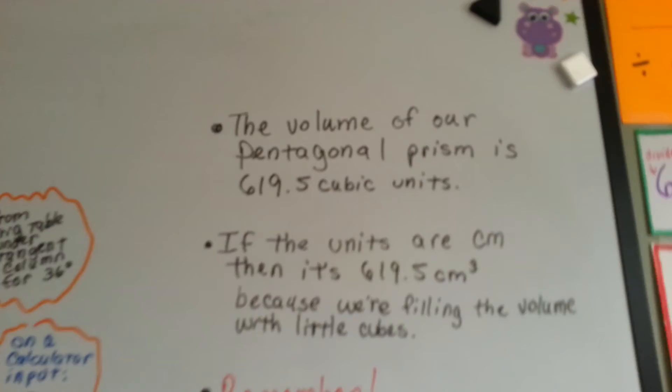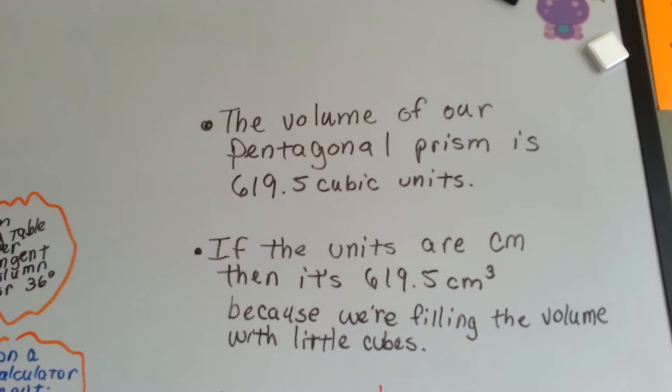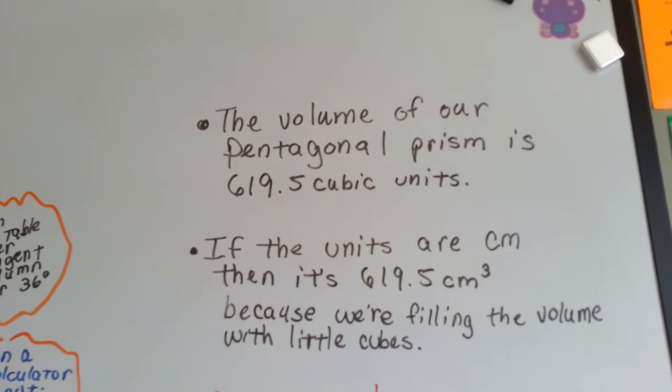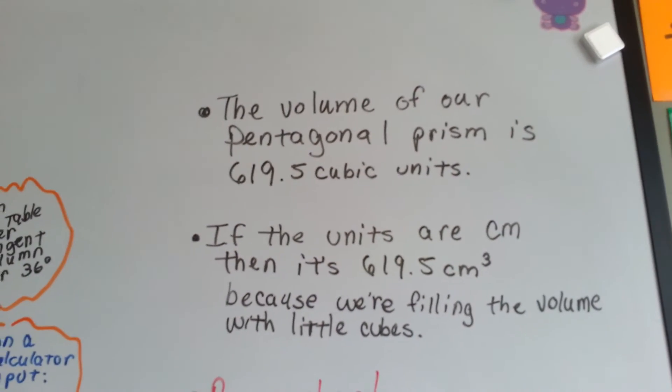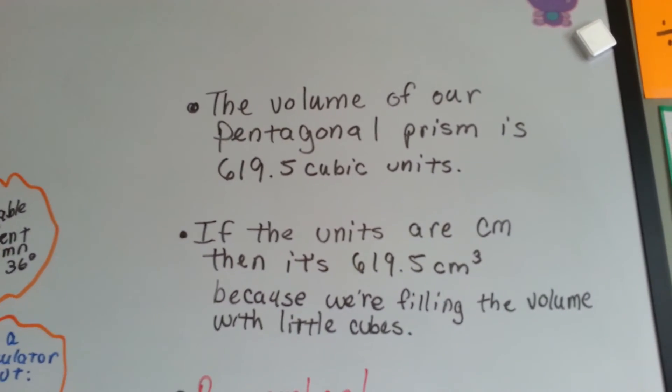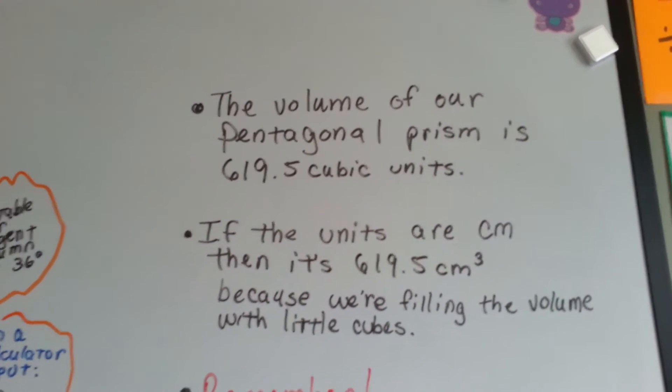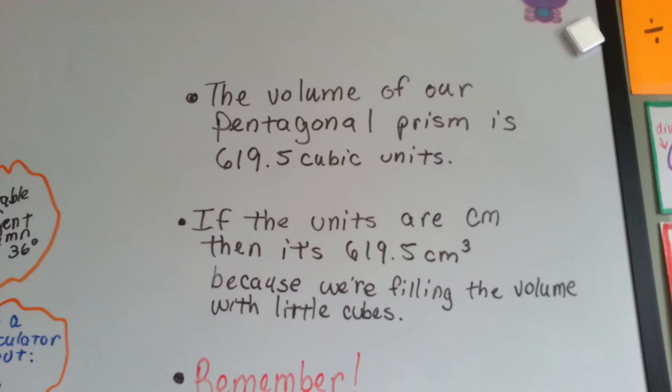So the volume of our pentagonal prism is 619.5 cubic units. If the units are centimeters, then it's 619.5 cubic centimeters. Because we're filling the volume with little cubes. It's cubic. It's cubed.